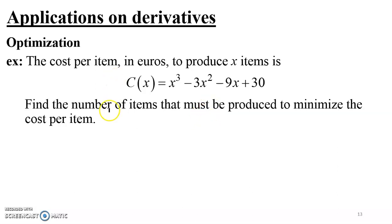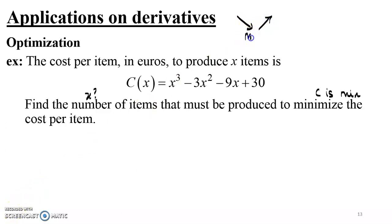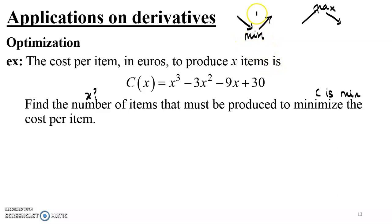I need to find X for which C is minimum. Now, how do we find the minimum or maximum of a given function? A minimum happens when the function decreases and then increases, giving a relative or local minimum. Similarly, when the function increases and then decreases, it gives a relative maximum. Whenever we need to maximize or minimize a quantity, we need to look at the first derivative, because it really determines the sense of variation of the function.